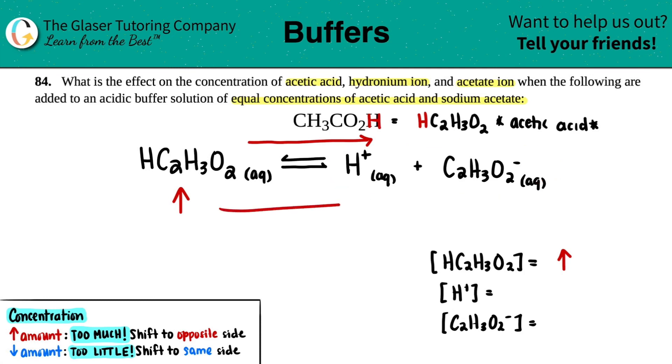If you're shifting to the product side, that means you're making more of them. Since both of them are on the product side, they both will increase. So everybody increases. All increases across the board.